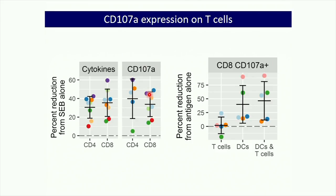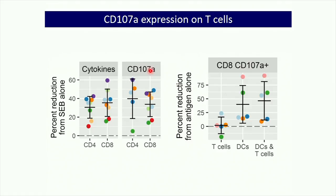Memory T cells must also kill virally infected cells. We measured degranulation via CD107A, a marker of cytotoxic T cell activity. Cells were stimulated with SEB, a superantigen causing 5–20% of cells to respond. Adding SEV caused strong impairment in both cytokine production and CD107A expression. Again, for CD8 T cells, this could be recapitulated when DCs alone were exposed to SEV, confirming SEV affect antigen-presenting cell function rather than directly suppressing T cells.